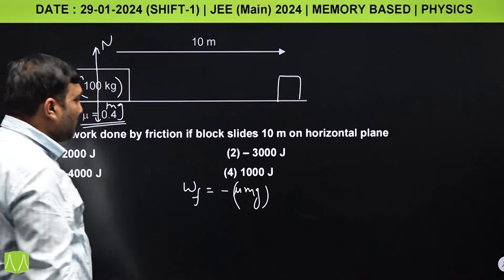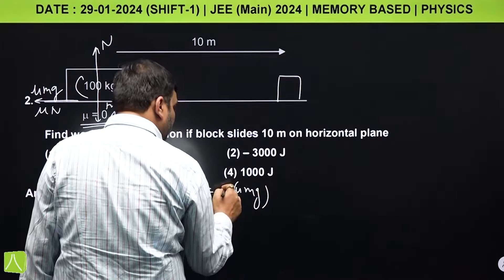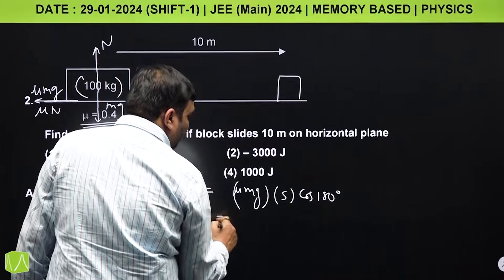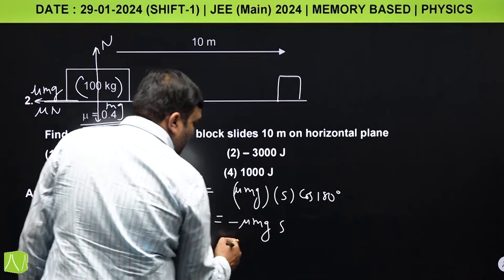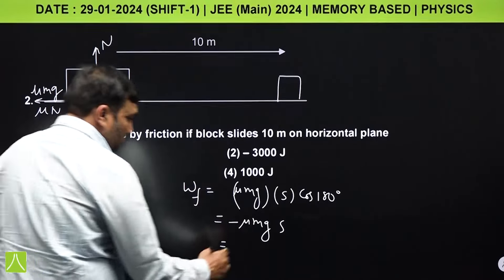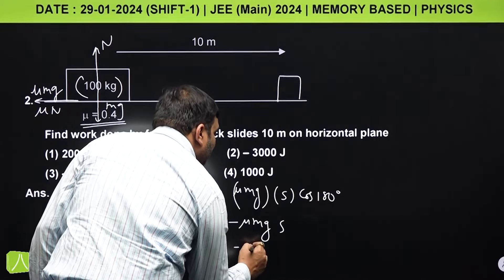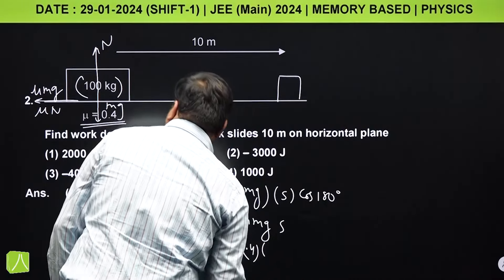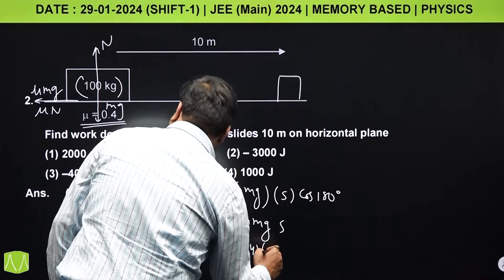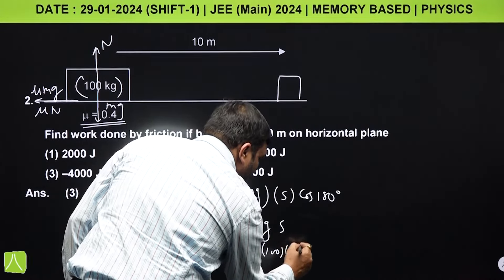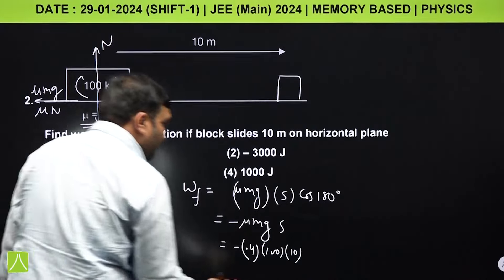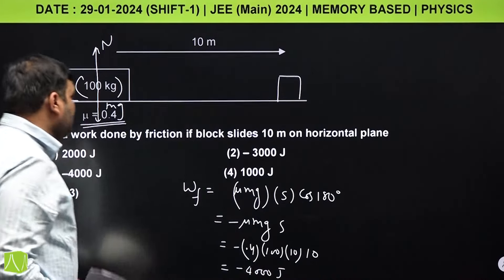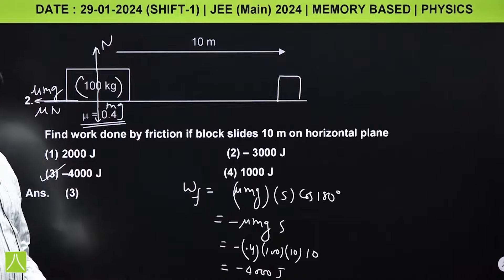Work done by friction is negative because friction acts at 180°. So it is −μmgs. Some students mentioned μ = 0.5 but I'll solve with μ = 0.4. Putting values: μ = 0.4, m = 100 kg, g = 10, s = 10, work done = −0.4 × 100 × 10 × 10 = −4000 J. The correct answer is the third option.